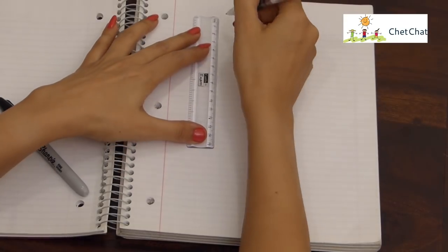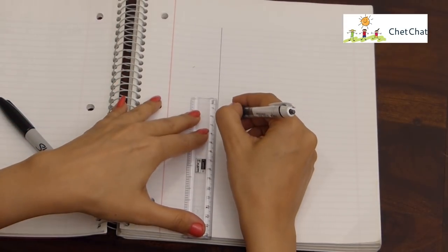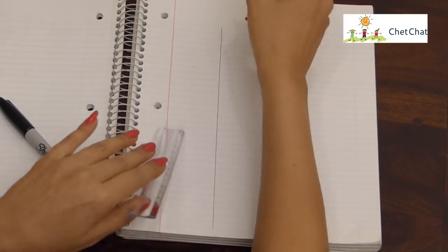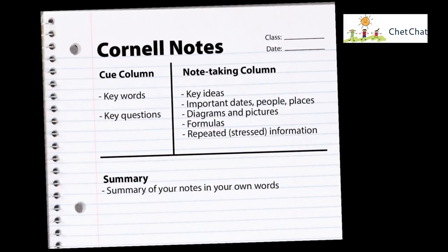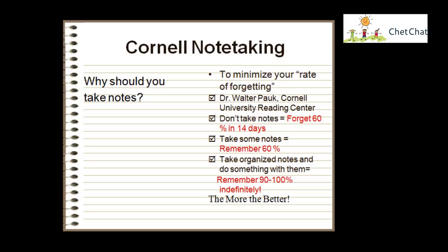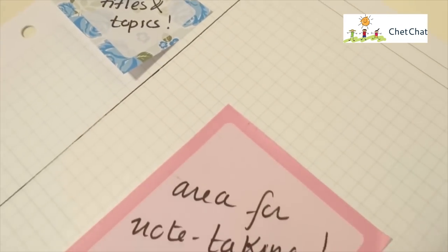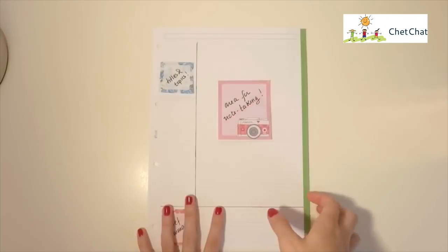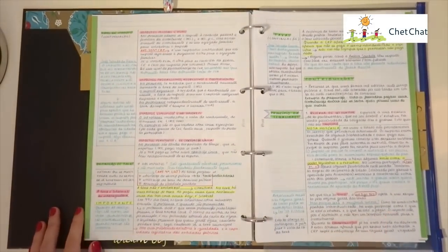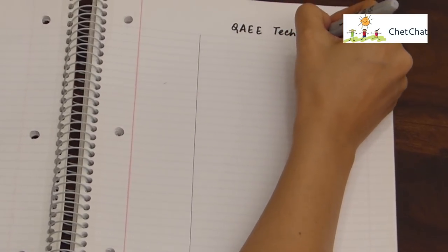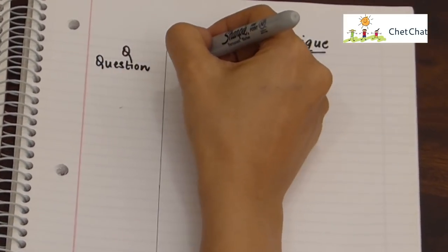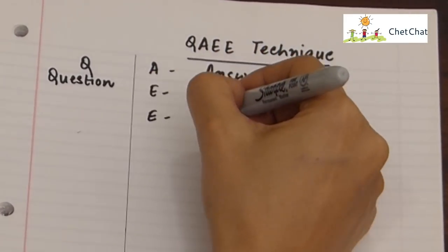I'll now introduce you to a very interesting technique called the QAEE technique. First, draw a margin on the left side of the paper before starting to take notes — ideally in the morning before class begins. This is similar to the Cornell method of note-taking devised by Walter Pock, an education professor at Cornell University, but we've modified it by retaining just the left margin. QAEE stands for: Q for question, A for answer, E for example, and E for evidence.